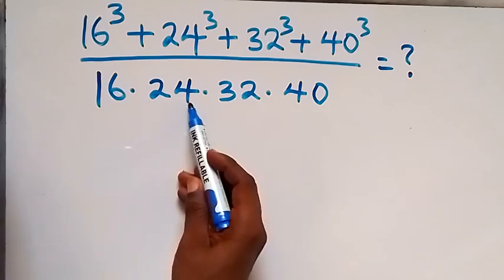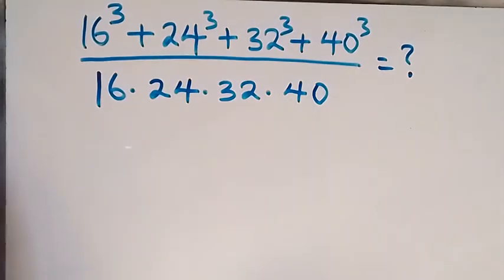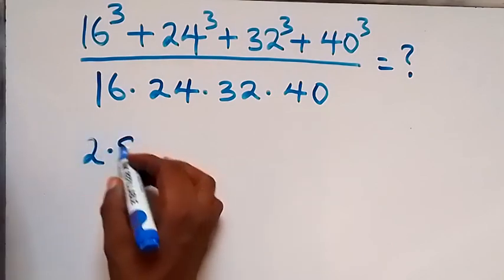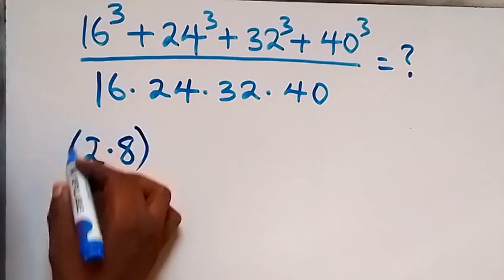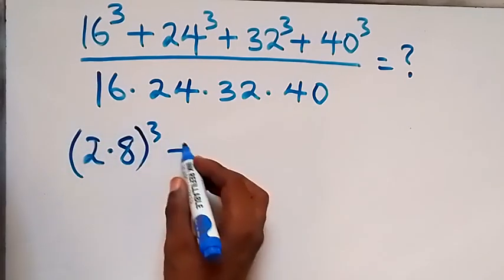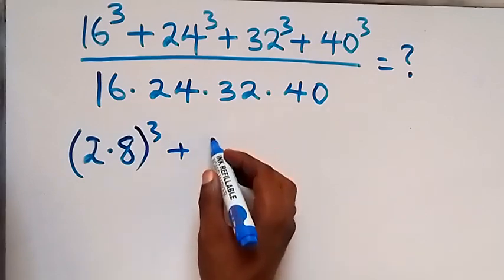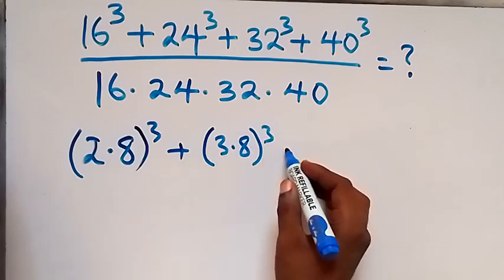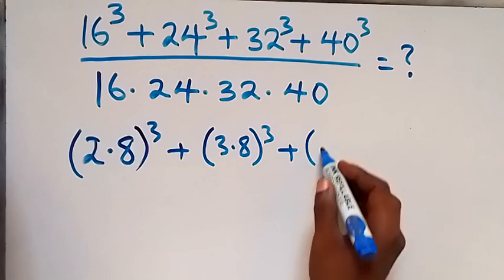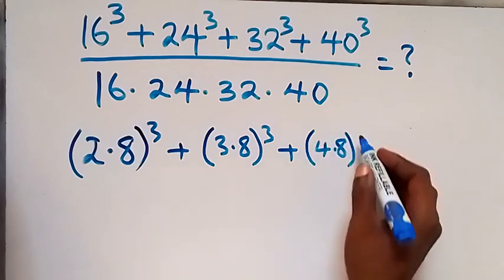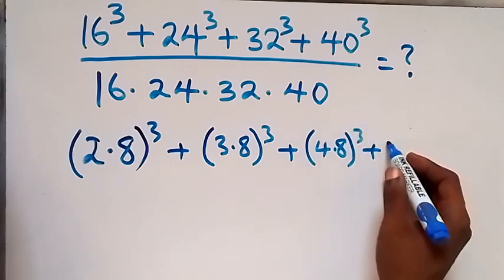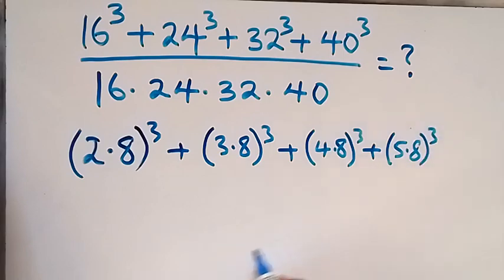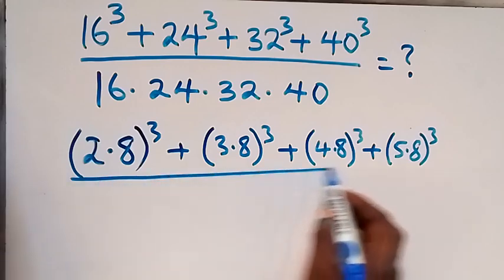Let's rewrite this. We write 16 as 2 times 8, raised to power 3, then plus 24 as 3 times 8, raised to power 3, then plus 4 times 8 raised to power 3, plus 5 times 8 raised to power 3, then all divided by the denominator.